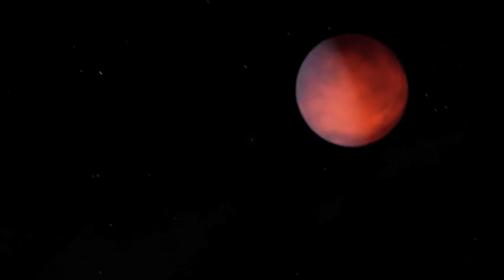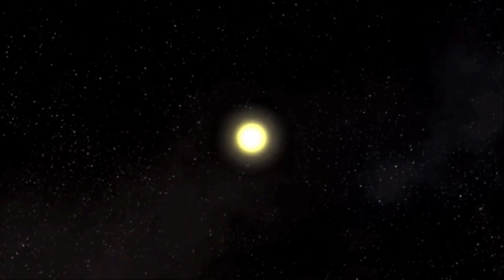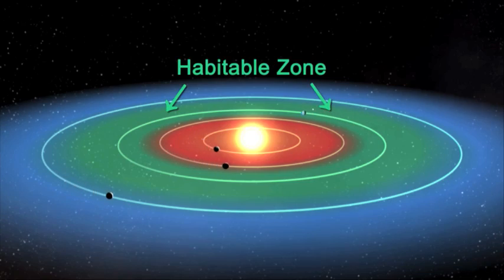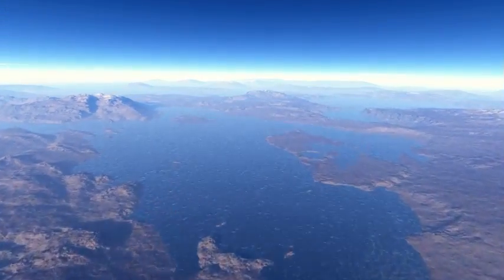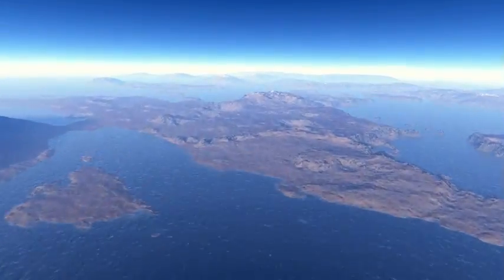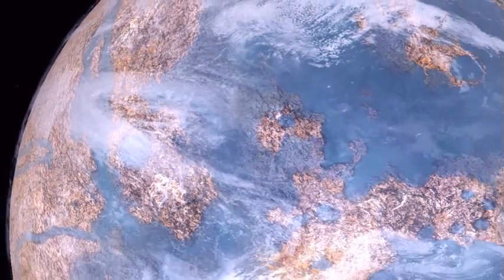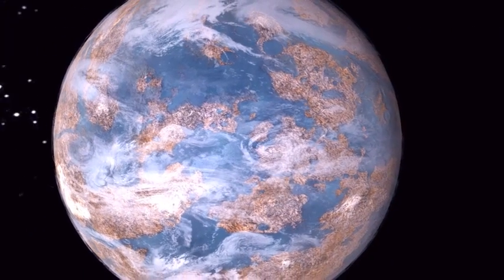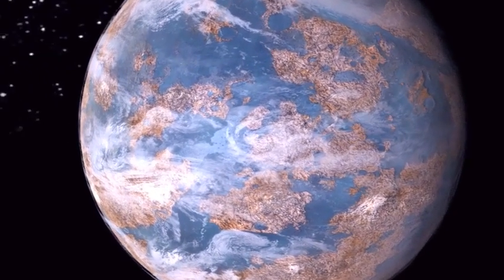Among the 1,100 planet candidates, the Kepler science team has found 54 that are orbiting in their star's habitable zone, a region where liquid water could exist on the surface of a planet. Five of those candidates are near-Earth size, and the other 49 range in size from twice the size of the Earth to larger than Jupiter.